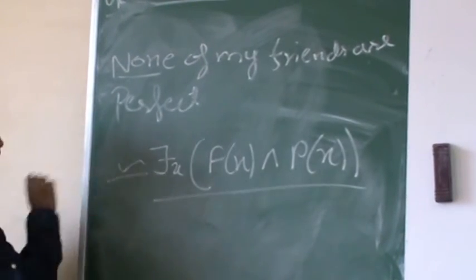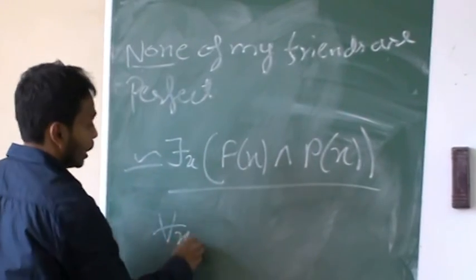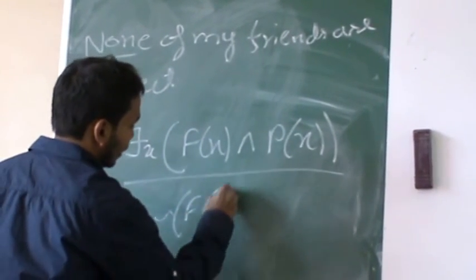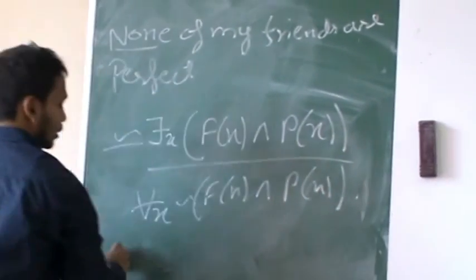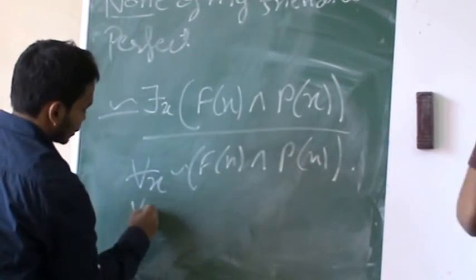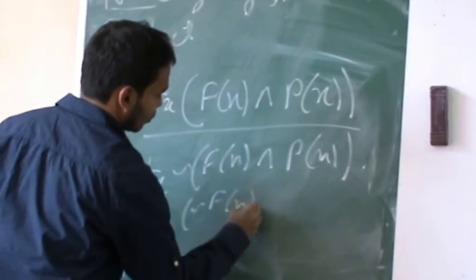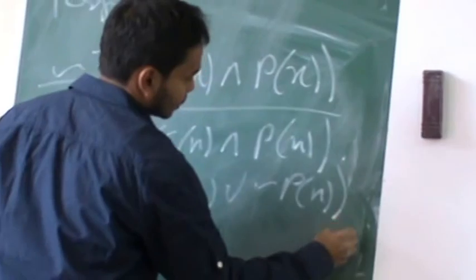So now we can also apply the negation here. I can also write the logical statement as for all X, negation of F(X) and P(X). And I can further solve this as negation of F(X) or negation of P(X). So that is exactly the negation here as well.